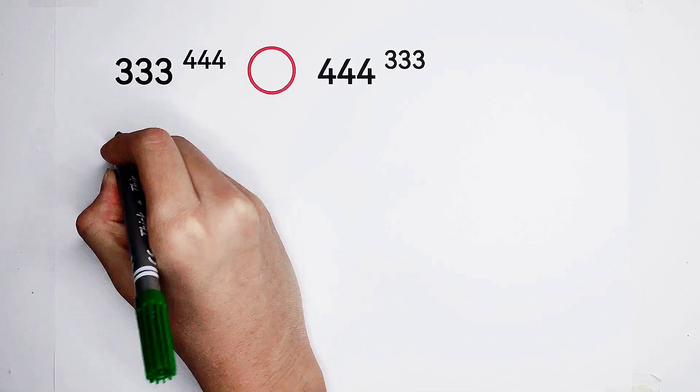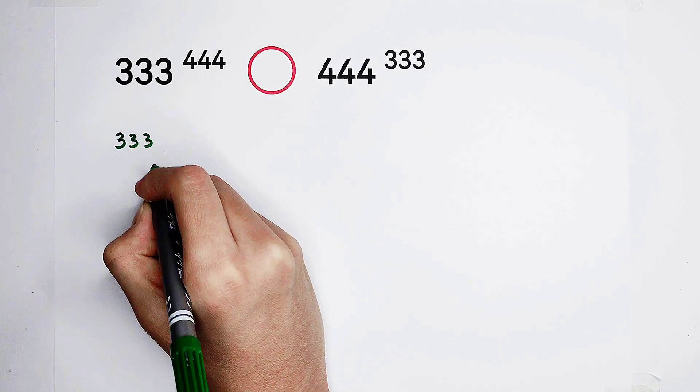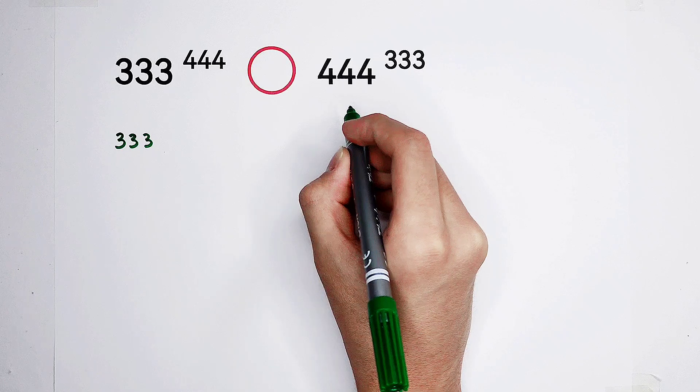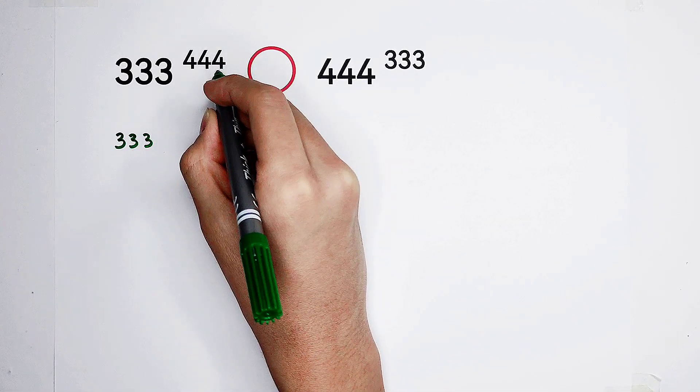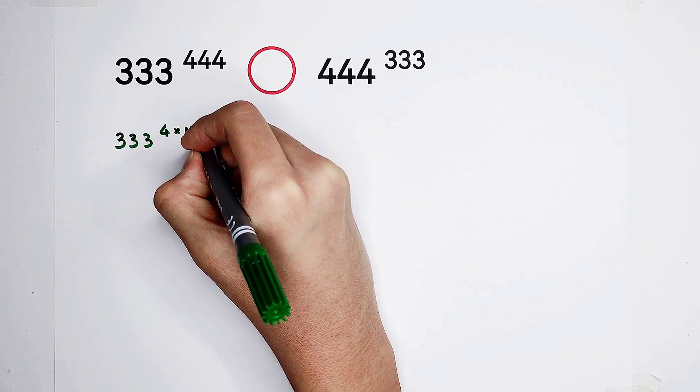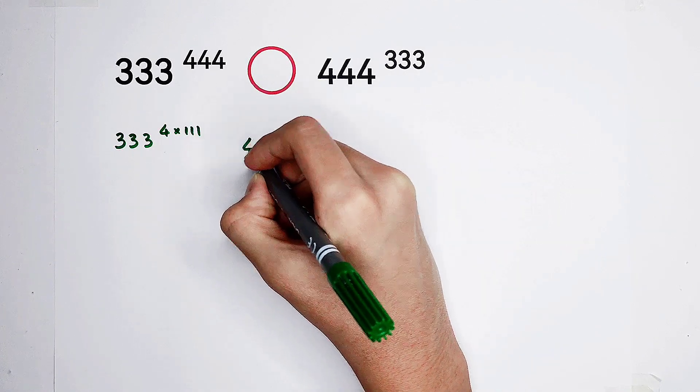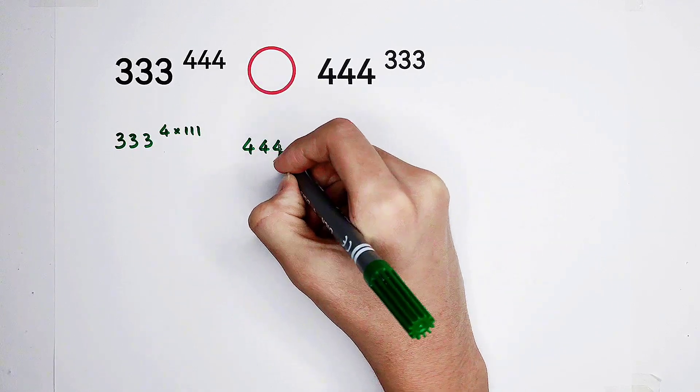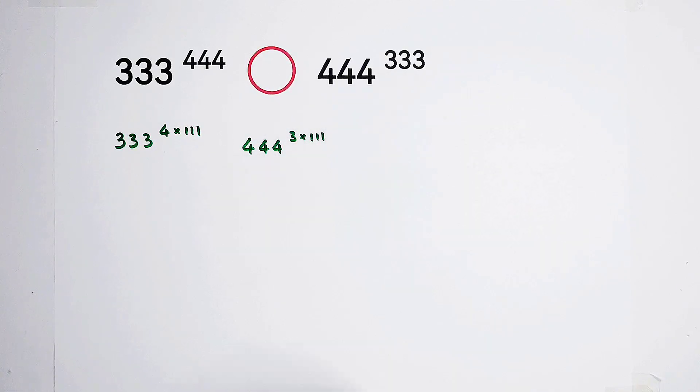So now, the first step is the basis are still these two numbers, these two ugly numbers, actually. Okay, an exponent here, it can be written as 4 times 111, and here, it can be written as 3 times 111.